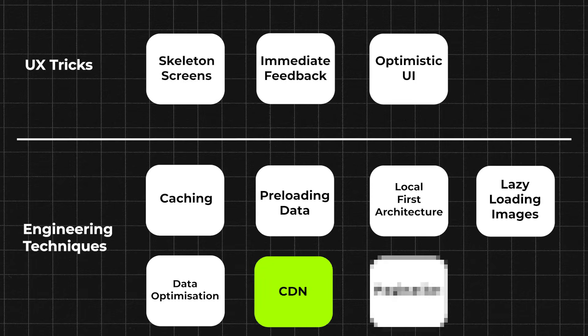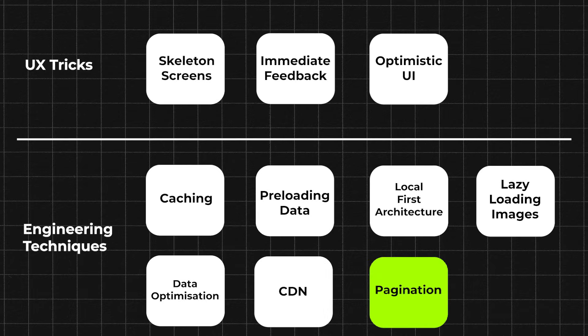Technique six: content delivery network, or CDN. A CDN stores your images and videos on servers around the world, closer to your users, which can cut network latency dramatically and make your app much faster. Technique seven: pagination. This is when data is loaded in small chunks instead of all at once — load just enough to fill the screen, then fetch more as the user scrolls down. This makes the screen load a lot faster.